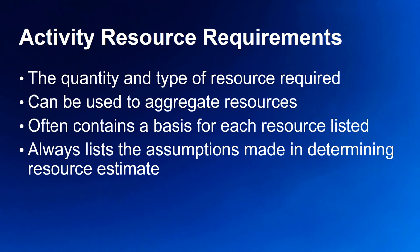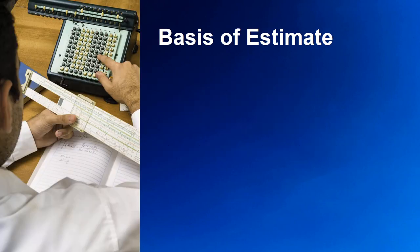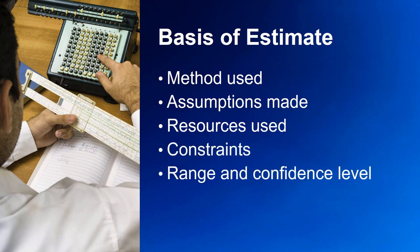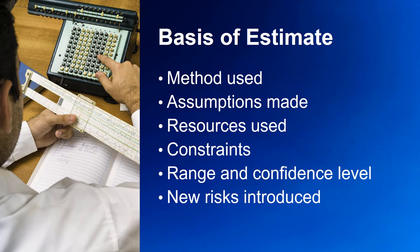The Basis of Estimates, or BOE, supports the Activity Resource Requirements. It is a key source for finding the methods used to develop the estimate — analogous or parametric, for example — and includes the assumptions and the type of resources used. It records whether there were any constraints affecting the estimate, and since estimates are predictions covering a range of possibilities, it attaches a level of confidence to each. It also captures whether the estimating activity revealed or introduced any new risks.